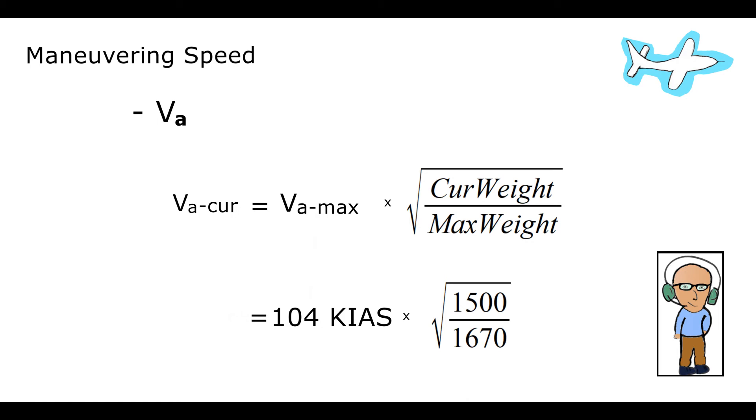Let's work through an example and calculate our maneuvering speed. Let's say we have a Cessna 152 that has a VA at max gross weight of 104 knots of indicated airspeed.